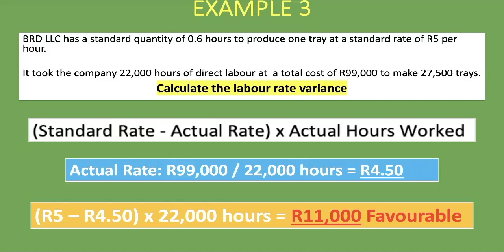The variance is favorable because we expected to pay 5 rand but only paid 4 rand 50. Possible reasons include hiring new workers at a lower rate, or workers completing tasks within normal hours rather than overtime, meaning we spent less than anticipated.